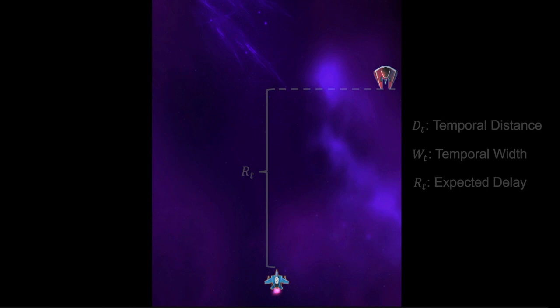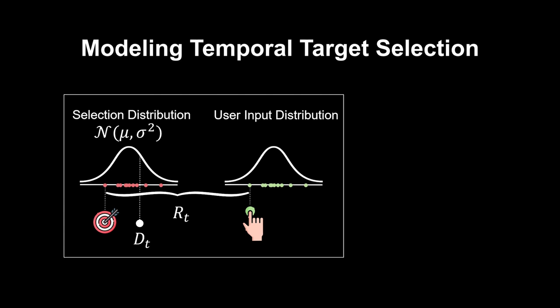When the player performs a task repetitively with the input button, a selection distribution that recalls when the player typically triggered the selection is formed. From this distribution, we can then calculate the selection accuracy given the temporal target and the delayed selection cursor.